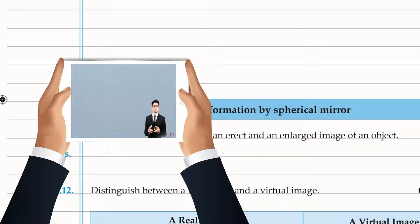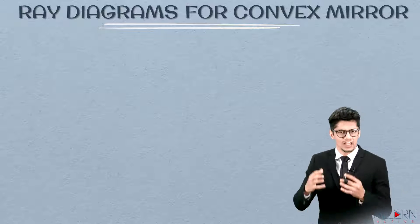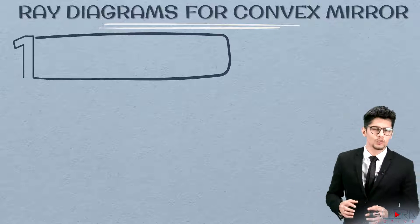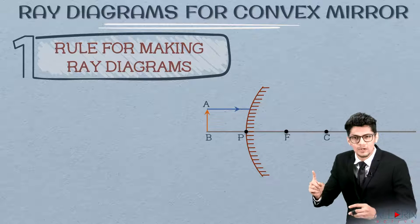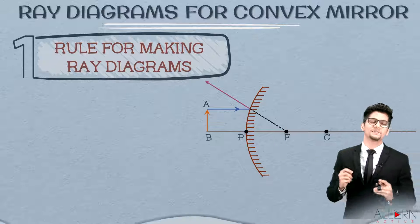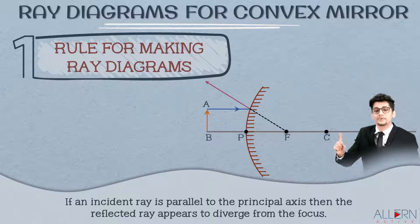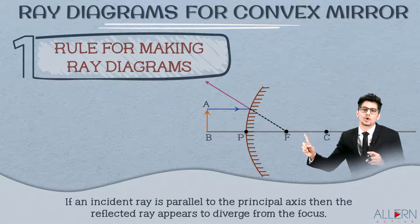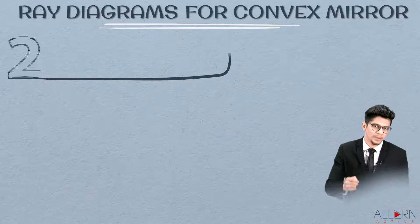To understand image formation by a convex mirror, we need to understand ray diagrams and the rules to draw them. There are three rules. The first rule: when the object is placed and the incident ray is parallel to the principal axis, since this is a diverging mirror, the reflected ray appears to diverge from the focus. So you draw the parallel ray, reflect it, and draw dotted lines toward the focus.